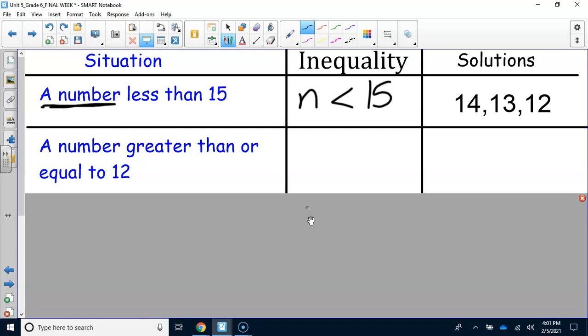The next one, a number greater than or equal to 12. So a number greater than or equal to. Make sure you have the line underneath it to 12. So the first three numbers that work, 12 is greater than or equal to 12. And then we have 13, 14, so on and so forth.